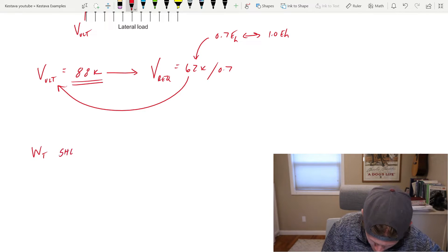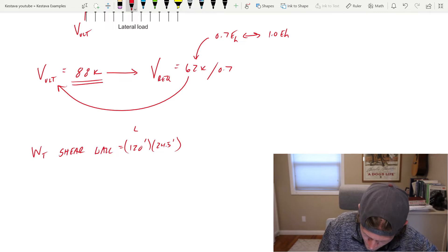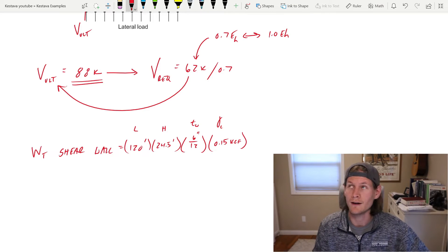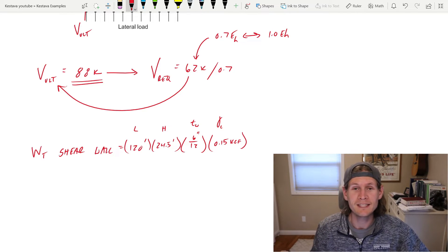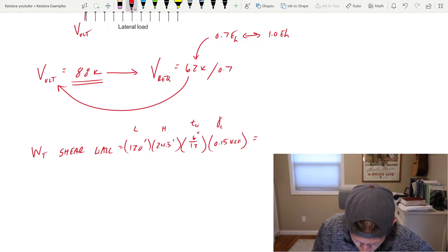So Wt for the shear wall is equal to 120 feet times 24.5 feet. This is the total length of shear wall. This is the total height of the shear wall times the thickness of the wall, which was six inches. And then the unit weight of concrete, which is 0.15 kips per cubic foot. 120 or 150 PCF, I've converted that into kips. So that's all that's happening there. Don't panic.